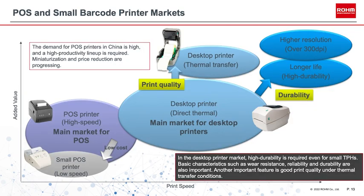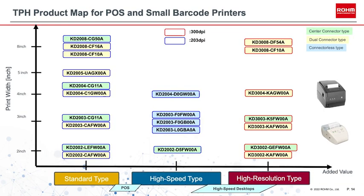Next are the markets for point-of-sale and small barcode printers. The main application for POS printers is receipts, while desktop printers are more typically used for printing labels. POS printers are required to be faster, with strong demand for greater miniaturization and low prices, especially in the Chinese market. Desktop printers are required to be more reliable and durable, necessitating thermal transfer printing, high resolution, and long life.